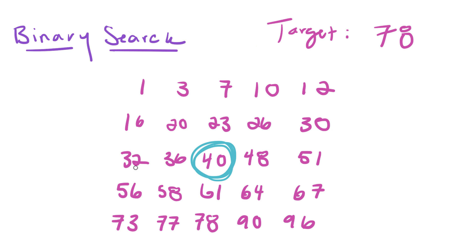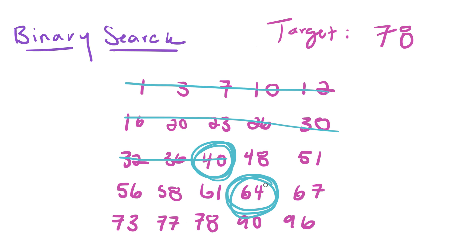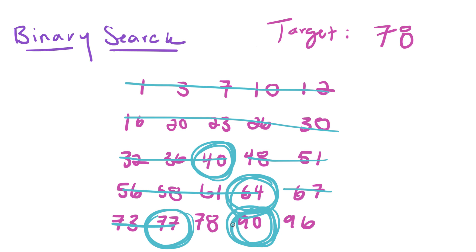The middle number is 40. Since 40 is less than 78, 40 and anything before it would not equal 78, so we cross all of that out. We repeat the process: the new middle is 64. Since 78 is greater than 64, we cross out 64 and everything before it. Next, the middle is 77. Since 78 is greater than 77, we cross out 77 and anything before it. Then we find 90 as the middle — since 78 is less than 90, we cross out 90 and 96.